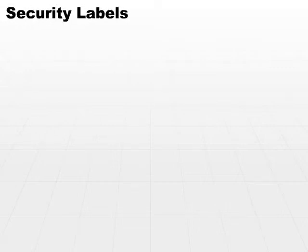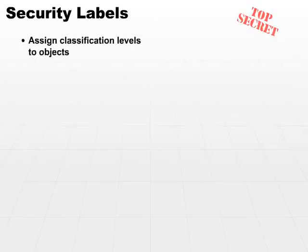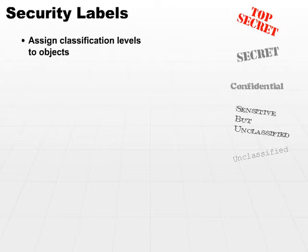Now let's take a look at several different access control techniques. First and foremost, in many access control techniques, we use the concept of a security label. Security labels assign specific classification levels to subjects and objects. When we look at the term subjects, we normally refer to these as security clearances.